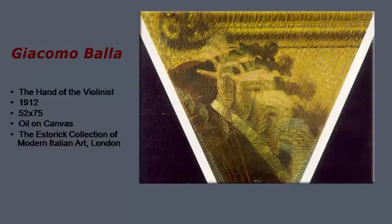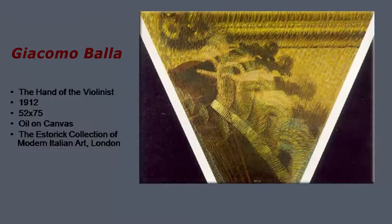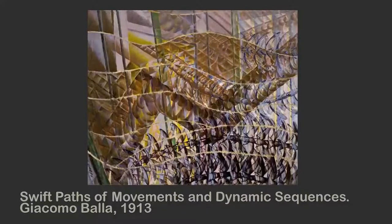Look at this image of the hand of a violinist. You all know how the hand of a violinist keeps moving all the time, and Giacomo Balla is trying to capture that movement precisely. In order to capture it, he is applying certain methods of painting, like repetition, simultaneity, and even fragmentation, as part of his visual vocabulary. By the same artist, Giacomo Balla — parts of movements and dynamic sequences. When you look at the painting carefully, you can see small little images of birds sweeping across the space.